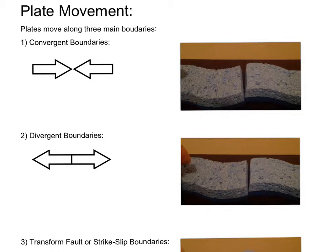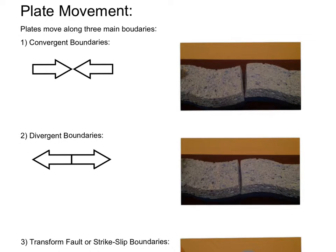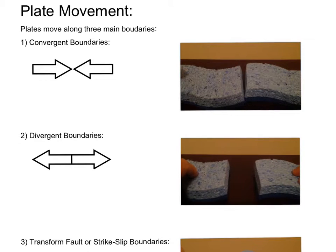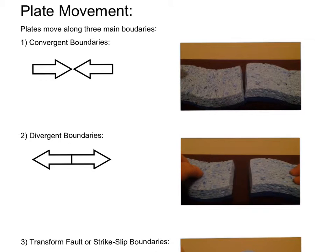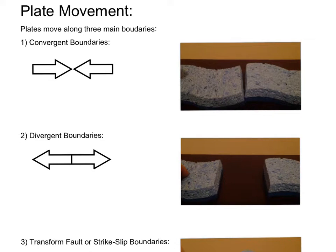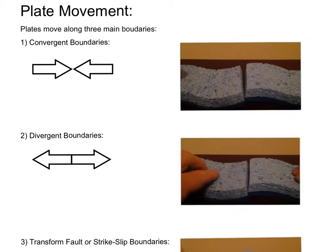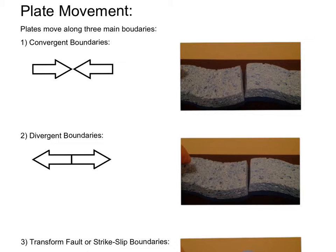Divergent boundaries — also illustrated using sponges in the video — are where plates separate apart from each other. Earthquakes occur and volcanoes, ocean ridges, and rift valleys are formed along divergent plate boundaries. On land, the East Africa Rift in Kenya and the Rio Grande Rift in New Mexico are great examples. In the ocean, the Mid-Atlantic Ridge and East Pacific Rise are also great examples of such formations.